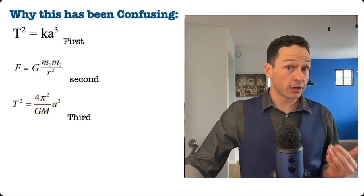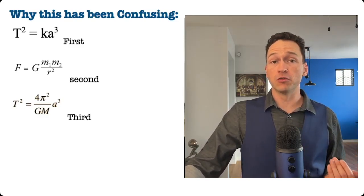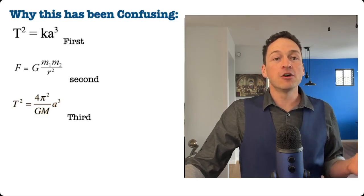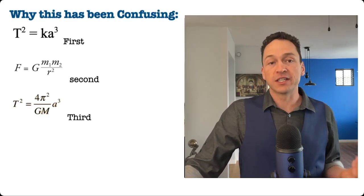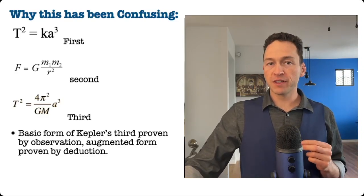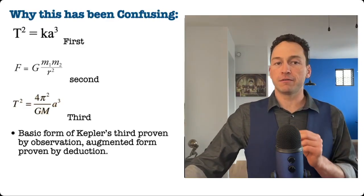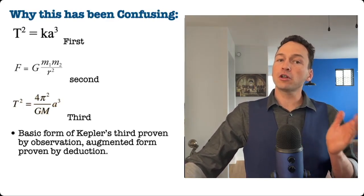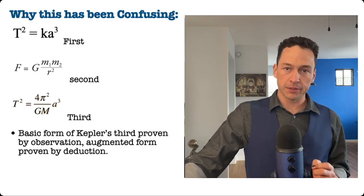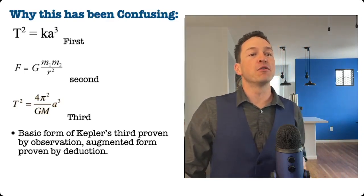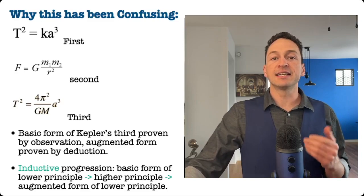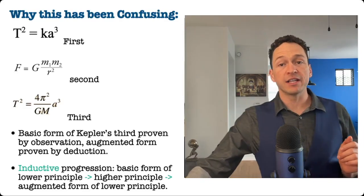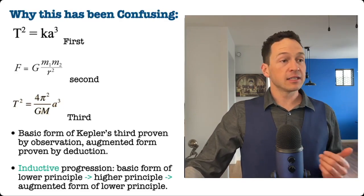Because we are taught the modern augmented form of principles in school, this makes us think that we need to know the broader principle first. In this case it makes us think we need to know gravitation in order to understand Kepler's third. The inductive approach to proving these laws is to first infer a more primitive principle from observation, then to proceed onward discovering other things, then to circle back to the earlier principle and integrate it with broader principles, thus proving its augmented form. This kind of process is an example of what Objectivists call the spiral process of knowledge, and it applies to the other two examples I raised in the motivation phase — the ideal gas law and the proof of individual rights.